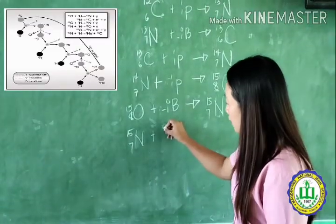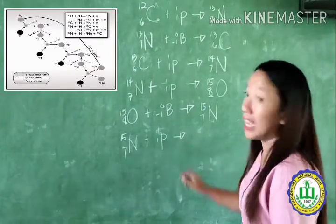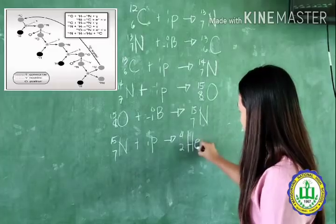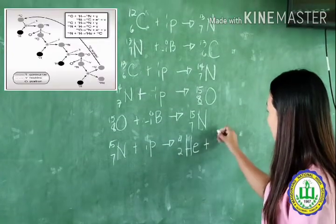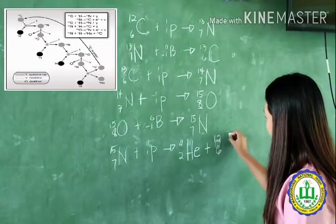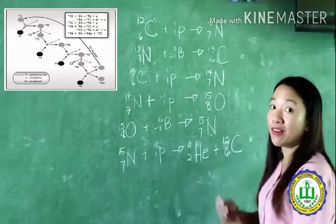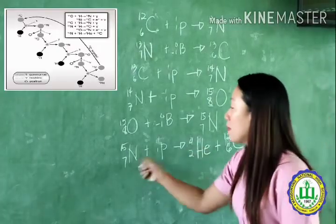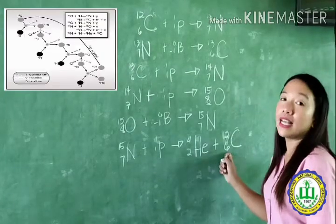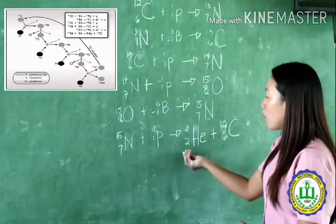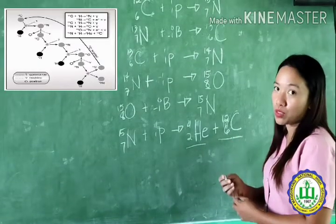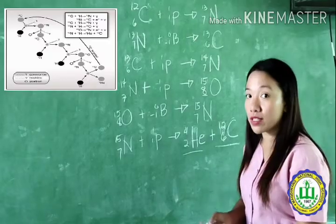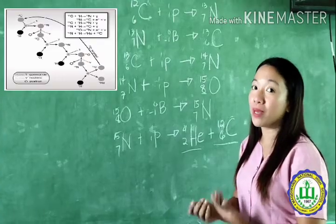When nitrogen-15 fuses with a proton and gives off helium-4, carbon-12 is regenerated alongside helium-4. Checking balance: 15+1=16 and 12+4=16; 7+1=8 and 2+6=8 — balanced. This is the series of reactions showing how helium and carbon-12 are produced in the CNO cycle, which occurs mostly in more massive stars.